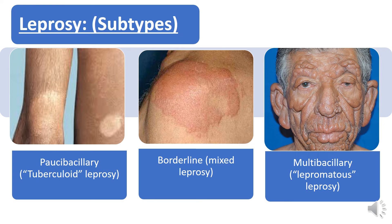In multi-bacillary leprosy, there are diffuse lesions. You can see that the patient's eyebrows, nose, chin, lips, and ears — the skin of those areas is affected. That is because the disease affects the cooler parts of the body.